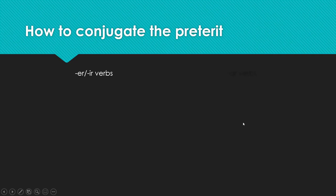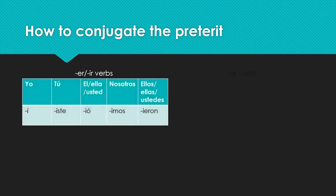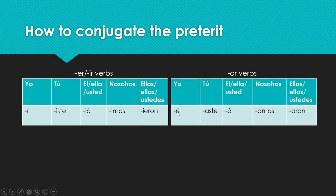So how do you conjugate the preterite? For ER and IR verbs the endings are: -Í (yo), -ISTE (tú), -IÓ (él/ella/usted), -IMOS (nosotros), -IERON (ellos/ellas/ustedes). For AR verbs: -É (yo), -ASTE (tú), -Ó (él/ella/usted), -AMOS (nosotros), -ARON (ellos/ellas/ustedes). There are some similarities — both share the -RON ending, -MOS on nosotros, -O on third person singular, and the -STE ending.